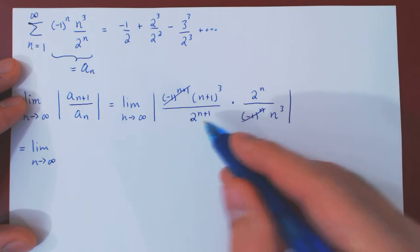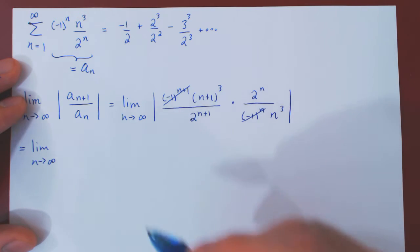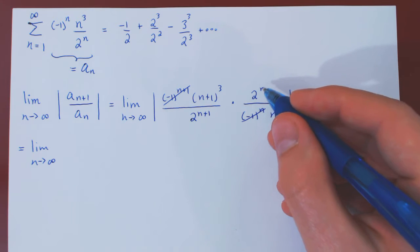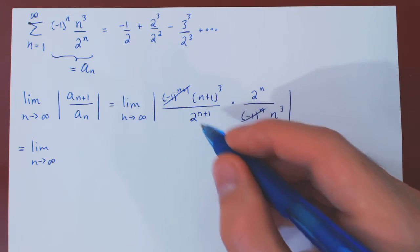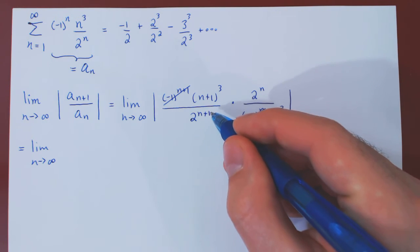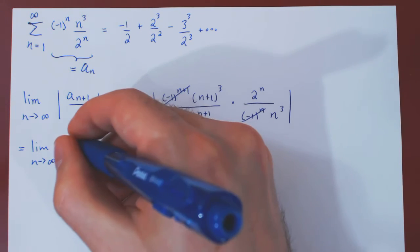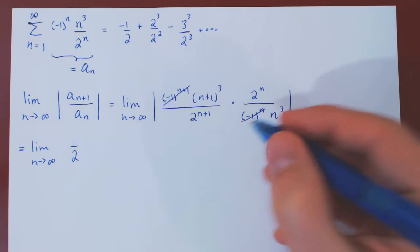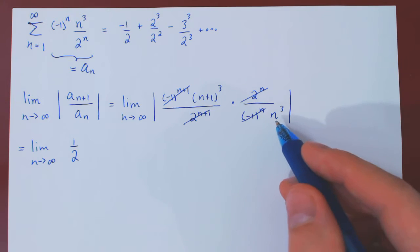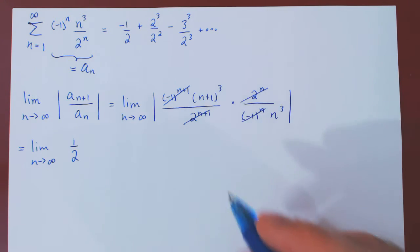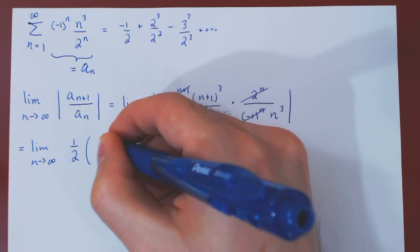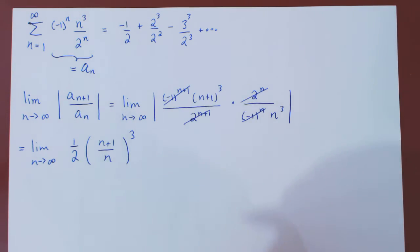The remaining terms are all positive, so we'll be able to drop the absolute value, and let's now regroup similar terms. Well, the 2^n over 2^{n+1}, we can subtract the exponent, so n+1 minus n gives you 1, so that's 1/2. And we'll regroup the (n+1)^3 with the n^3, but as both are cubed, we can combine them under the same exponent, as simply (n+1)/n all cubed.